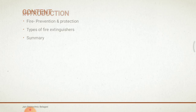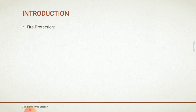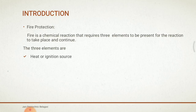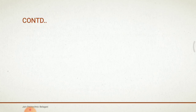Let us discuss fire protection and fire prevention. Fire protection — there is a triangle type concept. Fire consists of three elements; it is a chemical reaction that requires three elements to be present for the reaction to take place and continue. Those are heat or ignition source, fuel, and oxygen. If these three combine together, fire will occur, and we name it as a fire triangle.